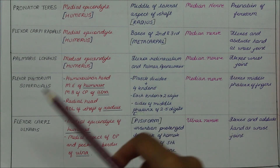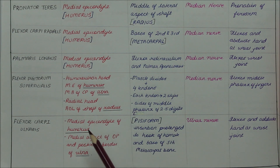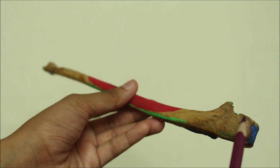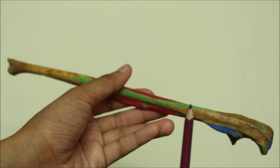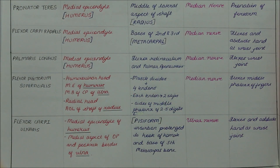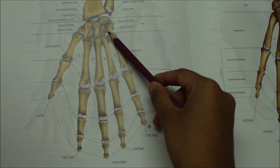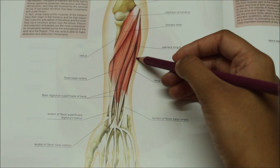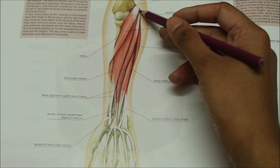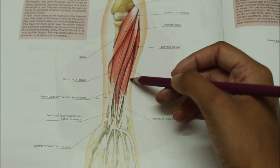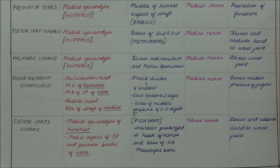Moving on to the next muscle, we have the flexor carpi ulnaris. It originates from the medial epicondyle of the humerus, the medial aspect of the olecranon process, and the posterior border of the ulna. It is inserted into the pisiform bone, with the insertion prolonged to the hook of the hamate and the base of the fifth metacarpal bone.